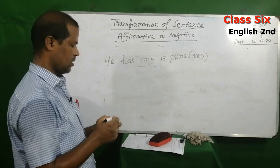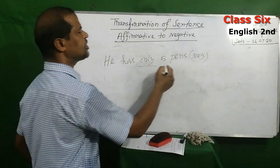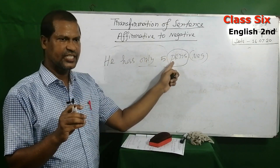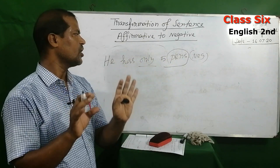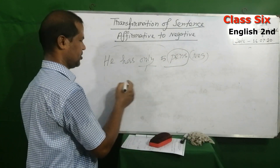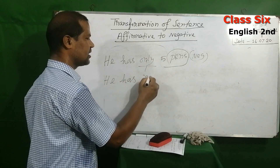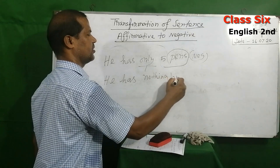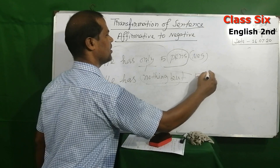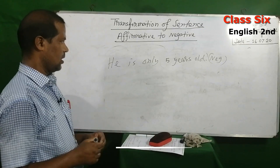Now, when 'only' modifies materials or things — for example, 'He has only five pens' — for making the negative form you have to use 'nothing but' in place of 'only.' So the sentence becomes 'He has nothing but five pens.'